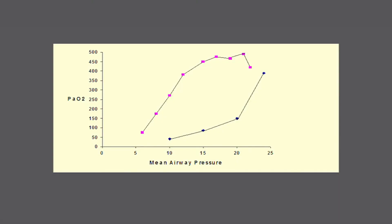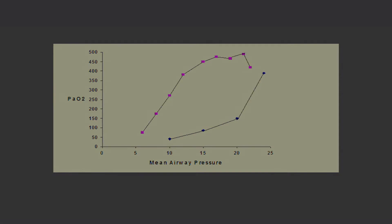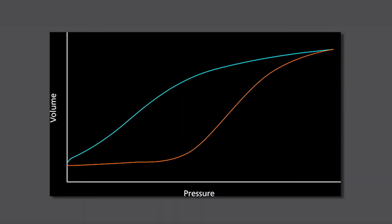Mean airway pressure is utilized to establish lung volume and thereby directly affects oxygenation. High-frequency oscillatory ventilation strategies often refer to the decoupling of ventilation and oxygenation. These strategies are based on the assumption that the first priority is given to establishing adequate lung recruitment. A pressure-volume curve demonstrates that full lung recruitment is not achieved until inflation pressures have reached a significant level. Following this initial recruitment maneuver, adequate lung recruitment may be maintained at a significantly lower pressure.